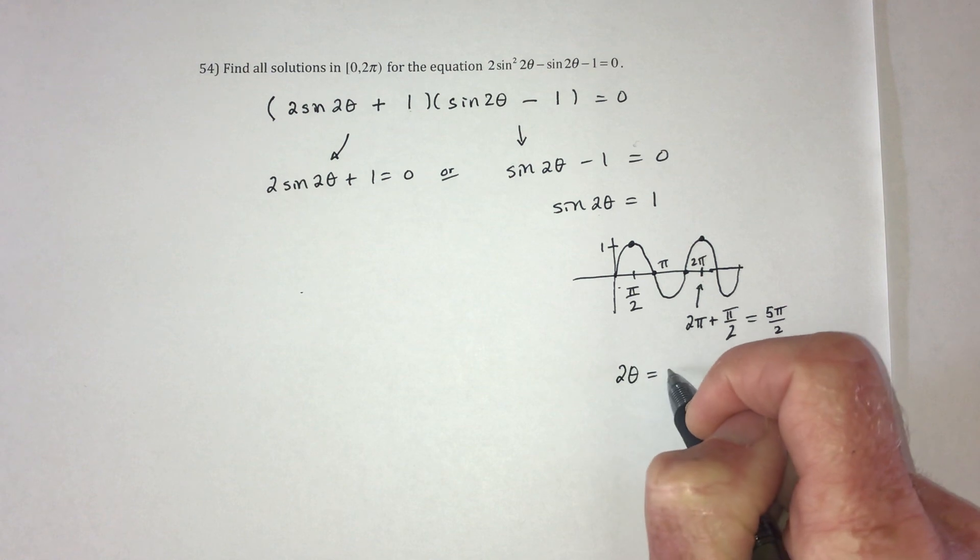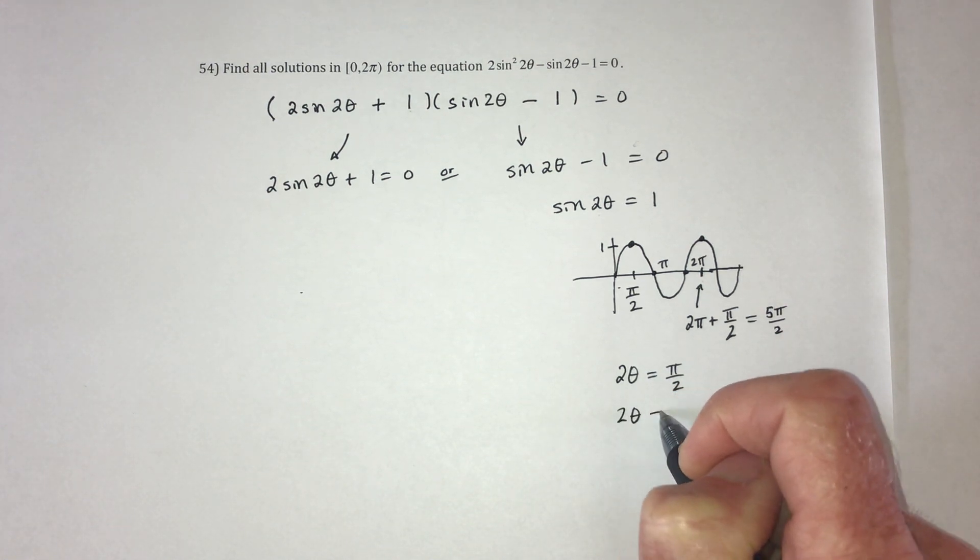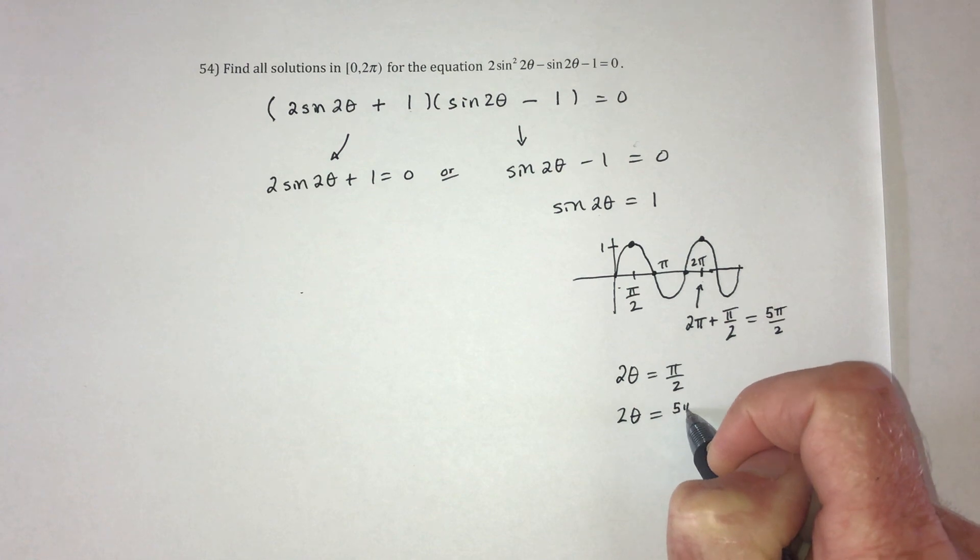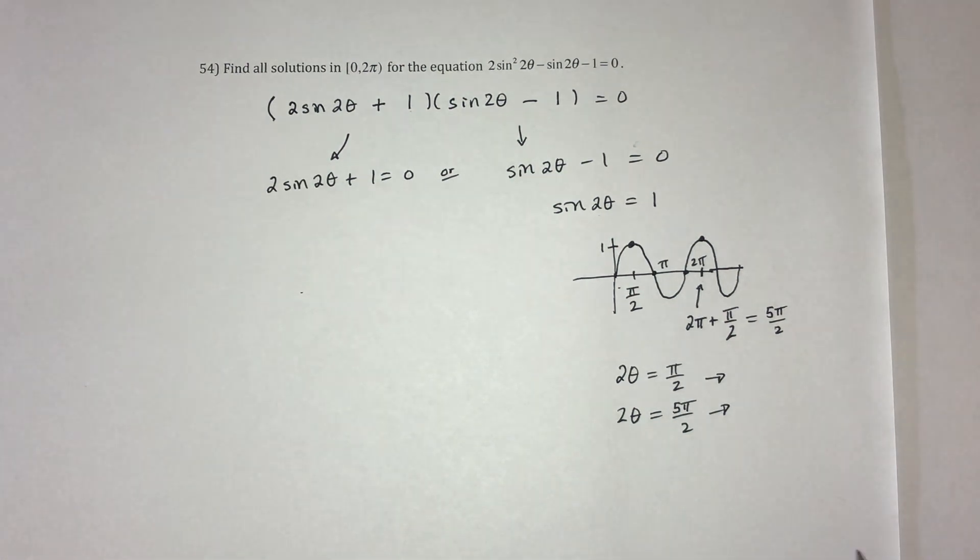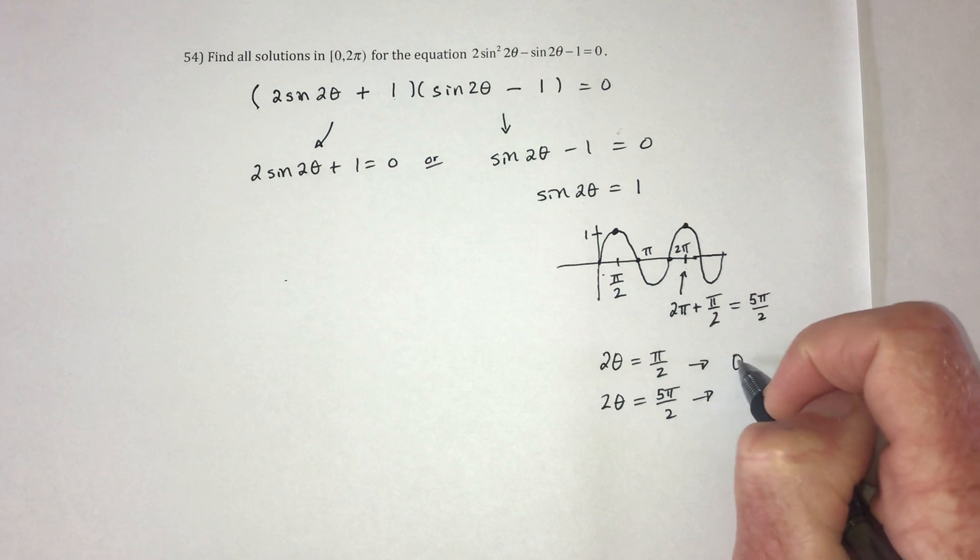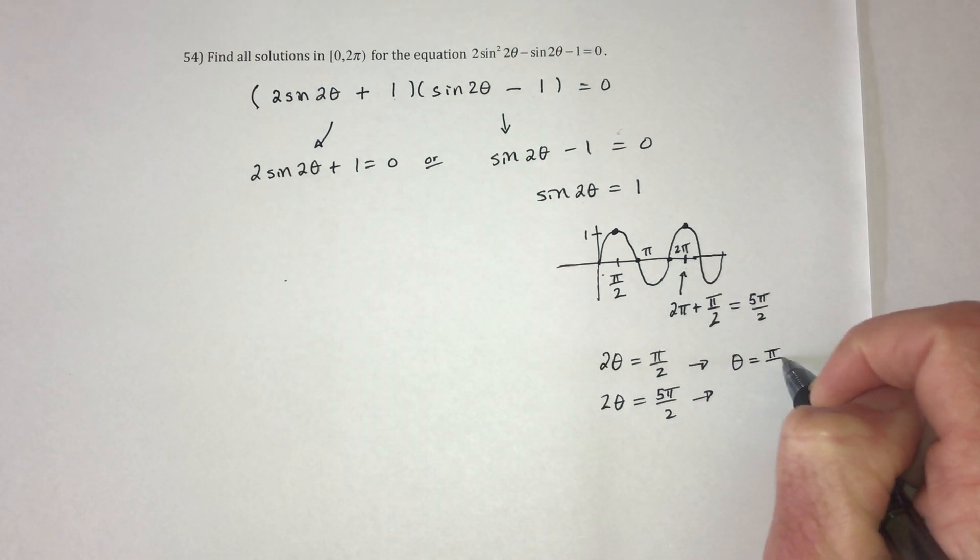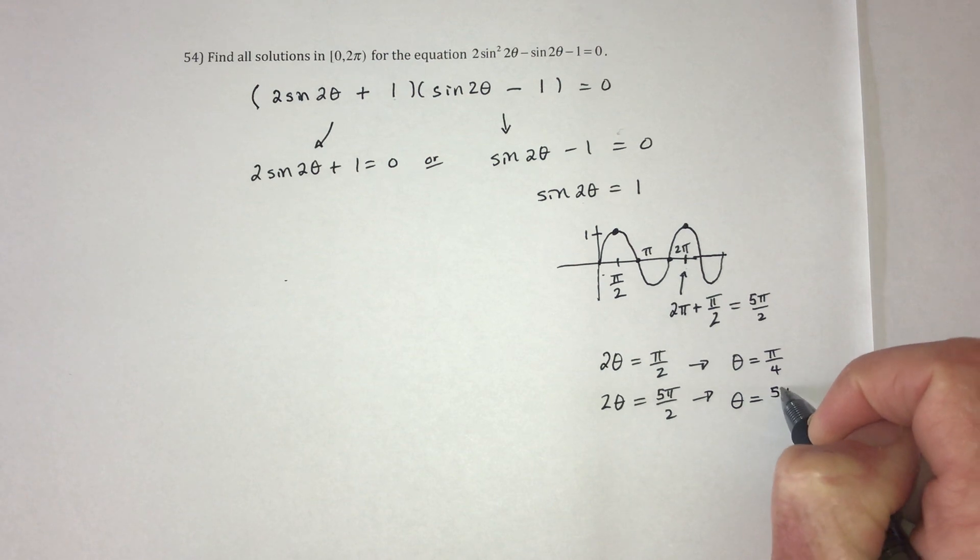So 2 theta equals pi over 2. 2 theta equals 5 pi over 2. And then divide each one by 2. So when you divide this by 2, it's going to become pi over 4. And the next one will be 5 pi over 4.